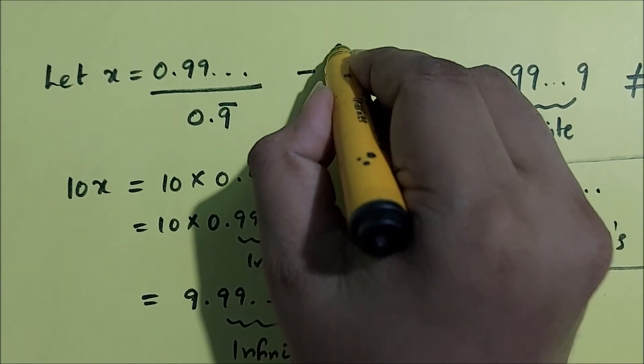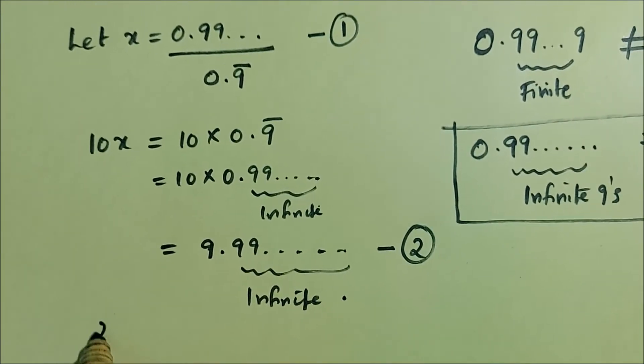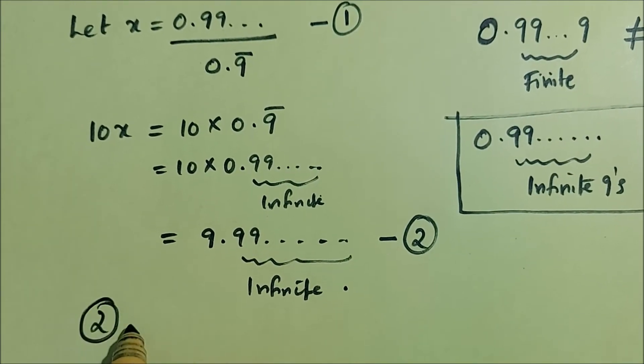So let that be equation 2, and let equation 1 be our statement or our assumption: x equals 0.9 bar. So now we have two equations.